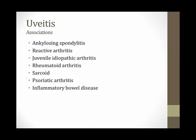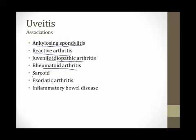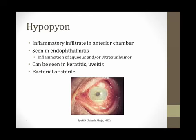Systemic inflammatory conditions associated with uveitis include: ankylosing spondylitis — a classic association involving spine inflammation; reactive arthritis; juvenile idiopathic arthritis; rheumatoid arthritis; sarcoidosis; psoriatic arthritis; and inflammatory bowel disease.